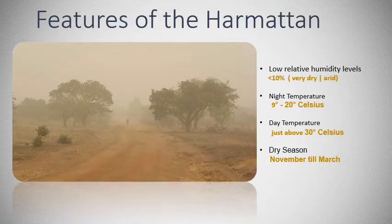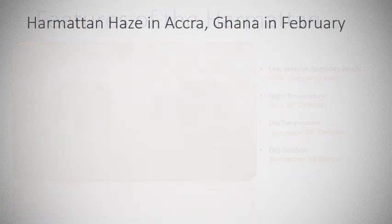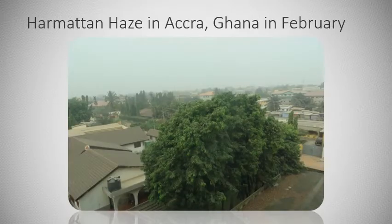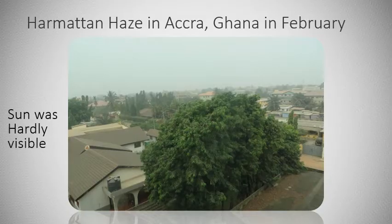The dry season in West Africa runs from November to March. Here you can see a picture I took myself in Accra, the capital of Ghana, on a nice February day. What you can see is a sort of grey sky — it's very hazy — and we call this haze the harmattan haze. That day, sadly, the sun was hardly visible because of all the particles in the air.